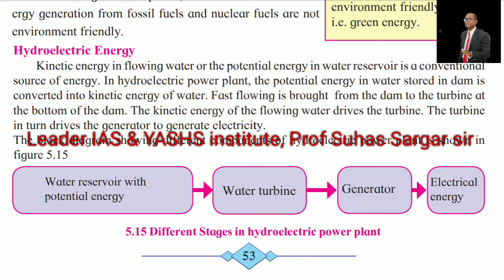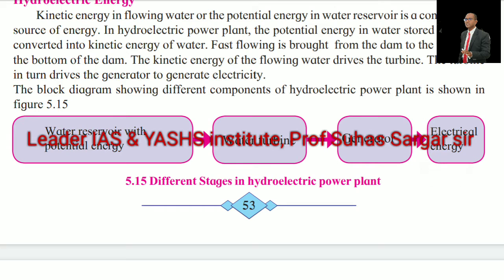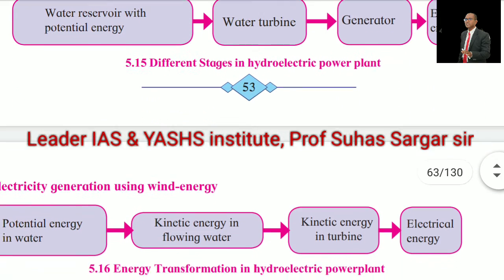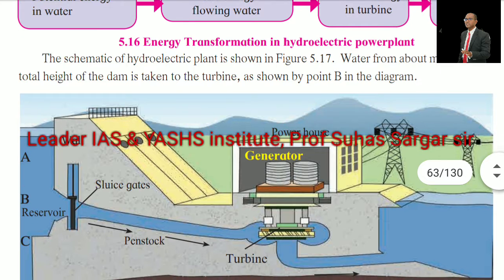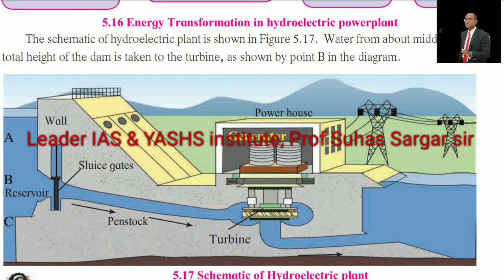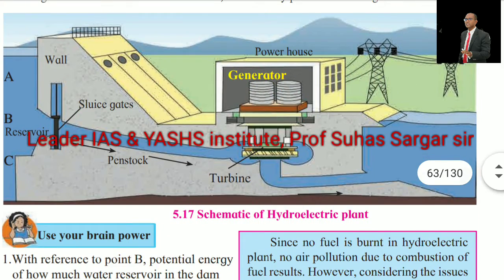Hydroelectric energy: Kinetic energy in flowing water or the potential energy in a water reservoir is a conventional source of energy. In a hydroelectric power plant, the potential energy in water stored in a dam is converted into kinetic energy of water. Fast-flowing water is brought from the dam to the turbine at the bottom of the dam. The kinetic energy of the flowing water drives the turbine, which in turn drives the generator to generate electricity. See the energy transformation in a hydroelectric power plant and the schematic of the hydroelectric power plant.